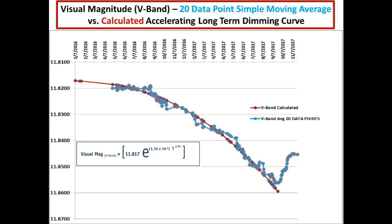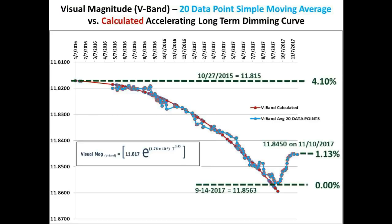For a quick reference, this is a 20 data point simple moving average light curve of Tabby's Star taken in the V-band, which spans over the last two years and shows a 4.1% dimming of Tabby's Star followed by an abrupt brightening that started on September 14, 2017, and it achieved an approximate 1.13% reversal before starting to dim once again. Since we have only received one V-band measurement since our last update, we are going to once again use Bruce Gary's G-band measurements to look more closely at the brightening period highlighted in the red box.